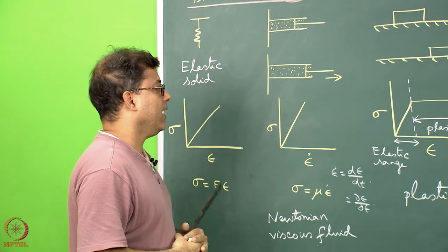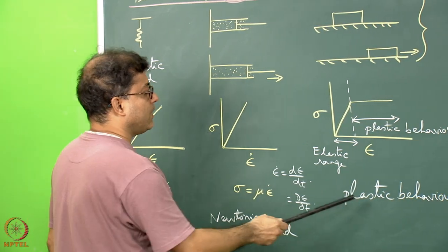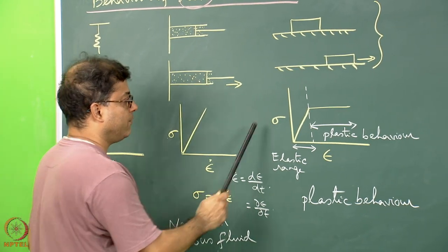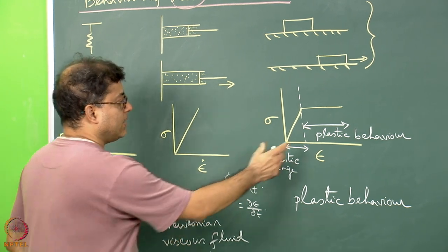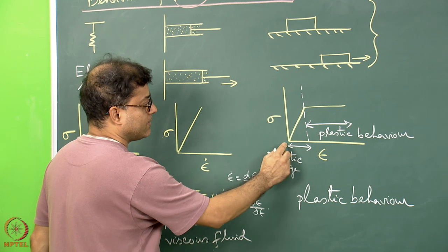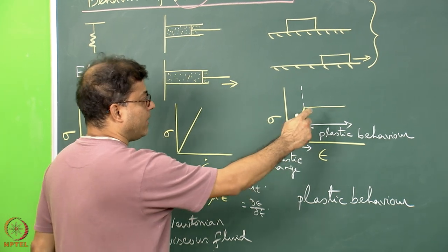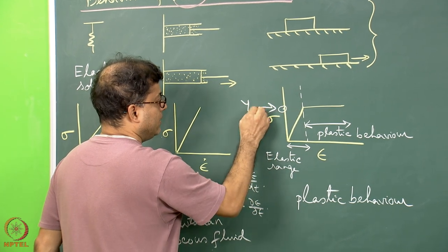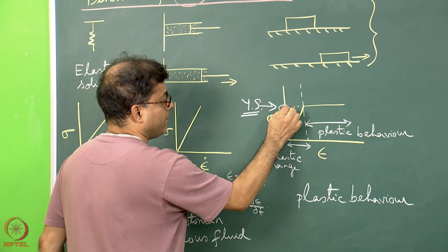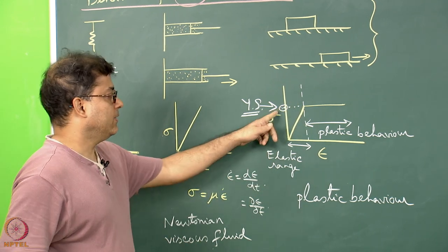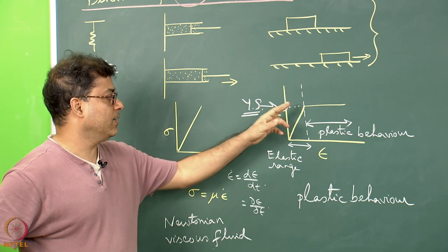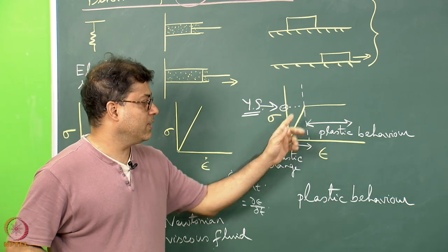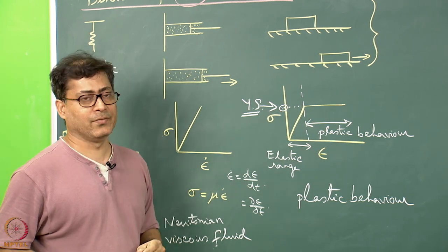Now we look at a more realistic behavior: the plastic behavior of solids. In the stress versus strain plot, there is an elastic range where strain increases linearly with stress. But after a while, for a certain amount of stress — which we call the yield stress — even if the applied stress is held at that yield stress and then stopped, the body keeps on straining continuously. For increasing further strain, we need not increase the stress.